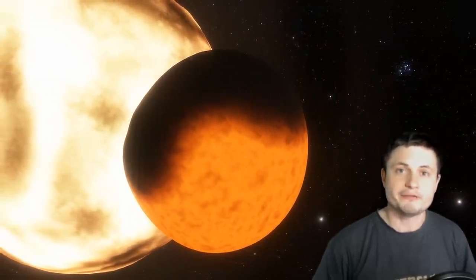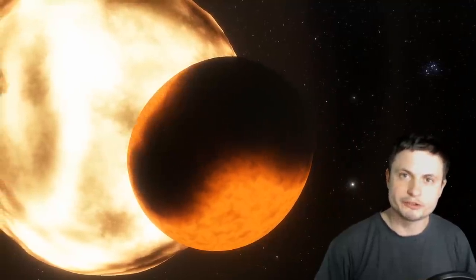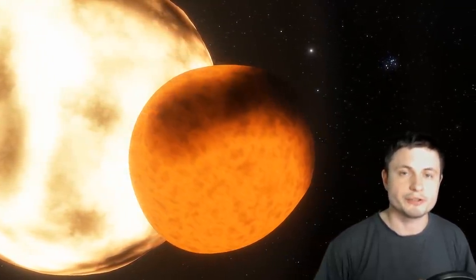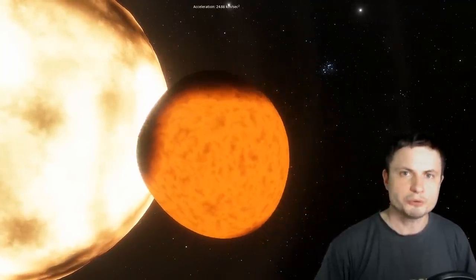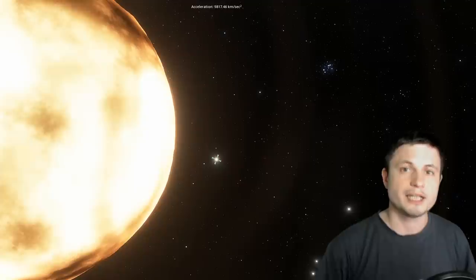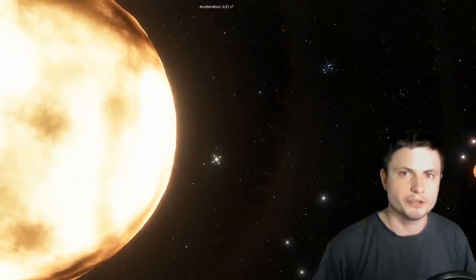But anyway that's kind of it for the updates of Betelgeuse. So first of all we've detected gravitational waves and secondly we also think that maybe just maybe this used to be two stars in which case it still has a lot of fuel left before it becomes a supernova. But on that note that's really it. Once we discover more about Betelgeuse and once we discover more about binary stars becoming singular stars I'll make sure to follow this up with another video.